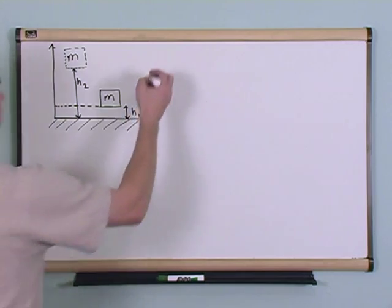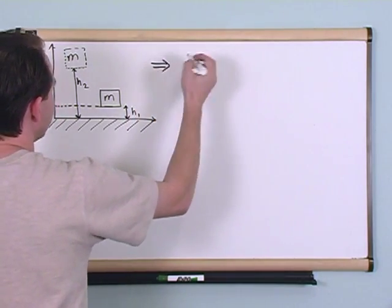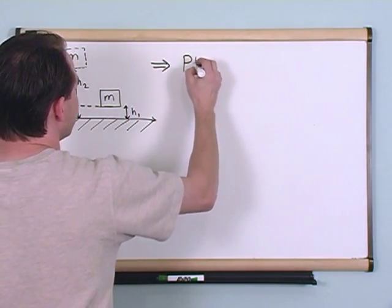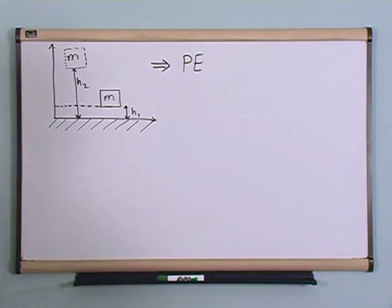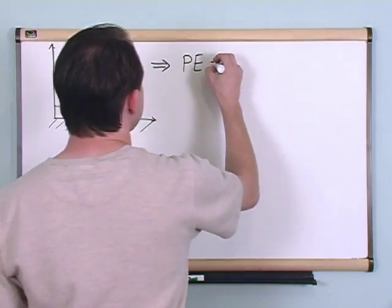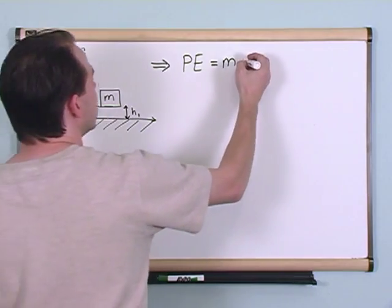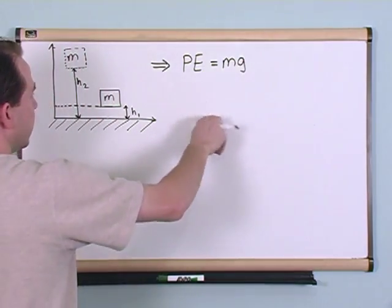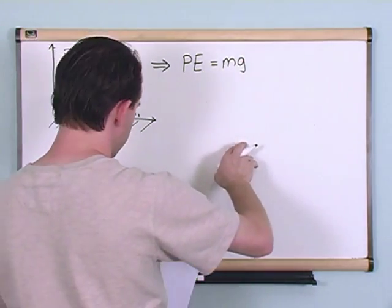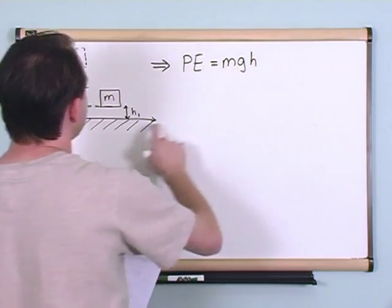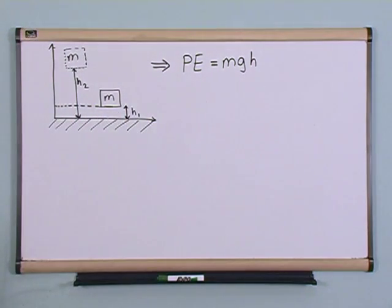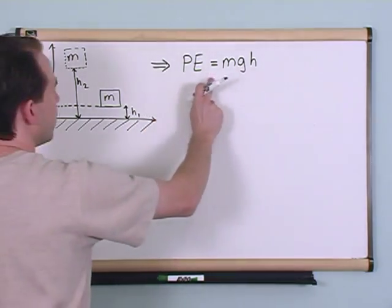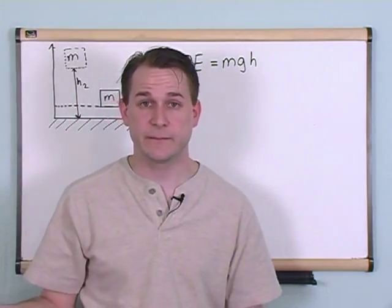So what I want to do is I want to give you the formula for potential energy which is super easy. The potential energy which I will abbreviate with PE is just simply equal to the mass of whatever it is you're talking about times gravity which is 9.8 meters per second squared times the height above the ground. Times the height. So this is a physical measurement of the potential energy of a system.